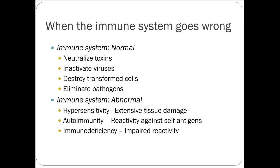Hypersensitivity can cause extensive tissue damage, hemodynamic instability to the point of a shock-type situation, and respiratory obstruction due to swelling and inflammation. Autoimmunity is where your body attacks its own tissues — things like type 1 diabetes and Crohn's disease. Immunodeficiency is impaired reactivity, usually because we're manipulating the immune system somehow — either through chemotherapy or intentionally to prevent rejection of a transplanted organ.